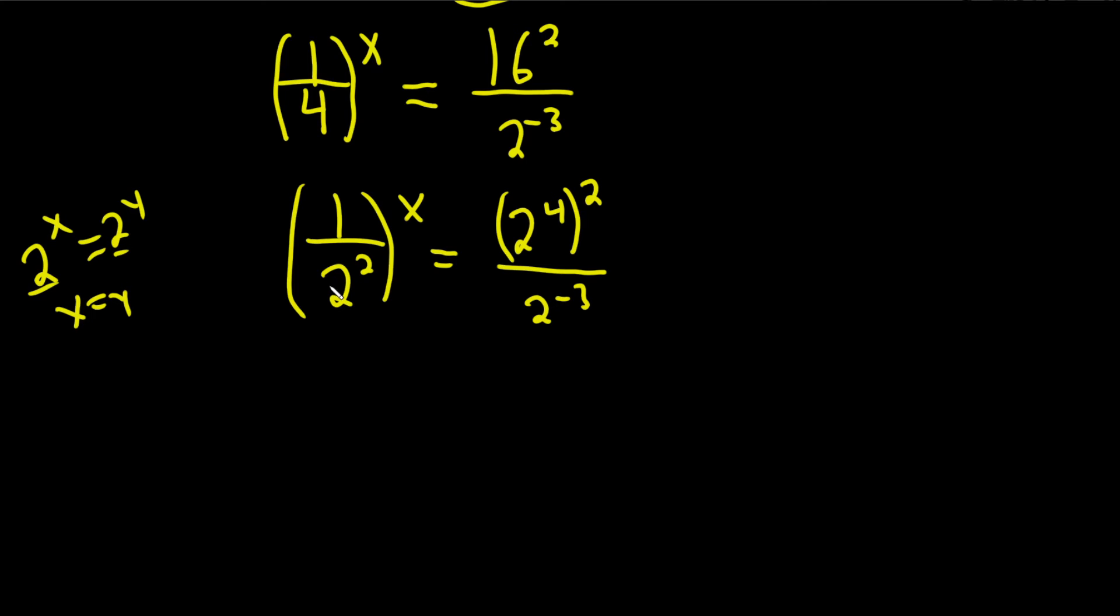All right. Over here now we can bring up the 2, so it'll be 2 to the negative 2 to the x equals, here you multiply, so 2 times 4 is 8, so you get 2 to the 8th.